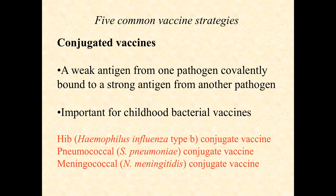Conjugated vaccines are when a weak antigen from one pathogen is covalently bound to a strong antigen from another. The HIB conjugate vaccine — Haemophilus influenzae type b — is the most popular and best understood example. This becomes really important for childhood bacterial vaccines.